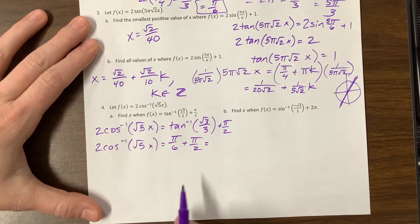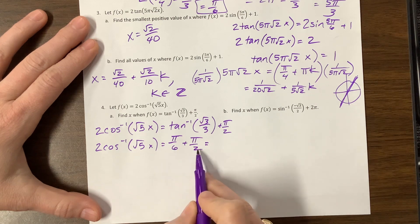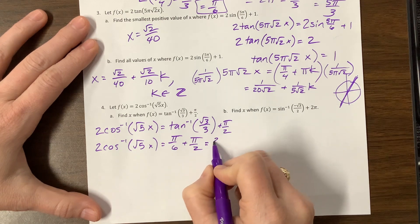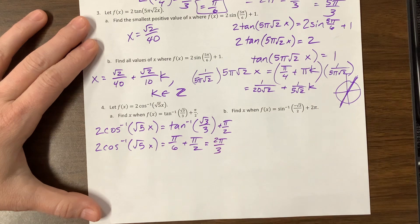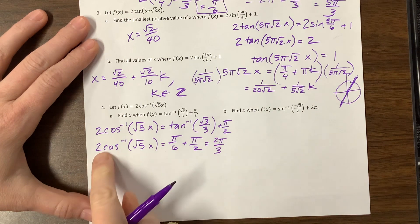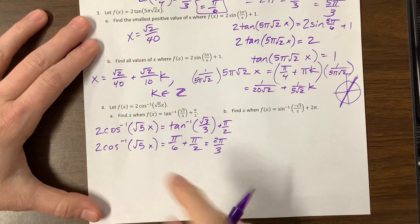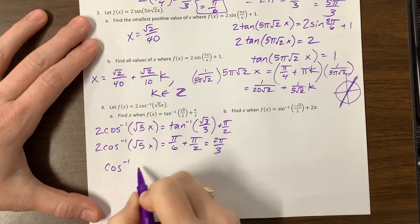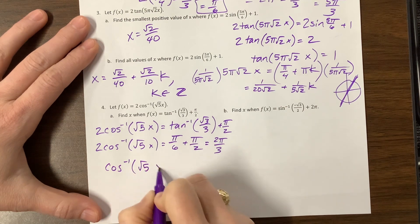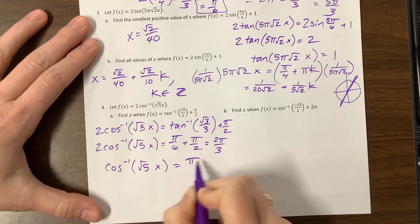π/6 plus π/2 ends up giving me, just for the sake of space I'm gonna write it right here. This is 1/6 plus 3/6 is 4/6, which reduces to 2π/3.